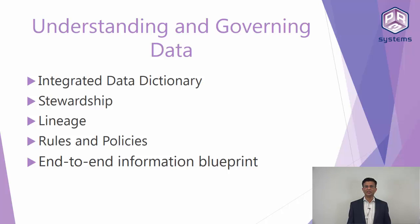There are three components to Information Governance: people, process, and technology. We'll be talking about the technology piece. We also help organizations deal with their people and process aspects, but that is not going to be the scope of this course.